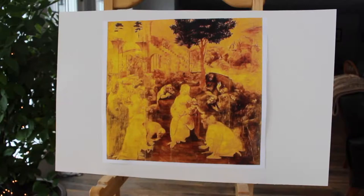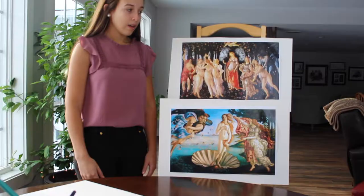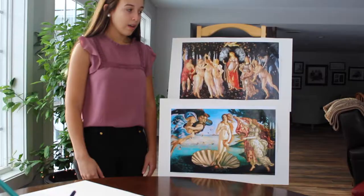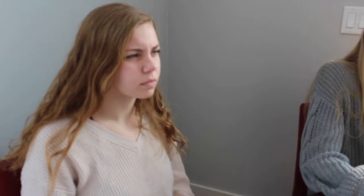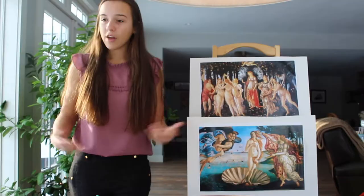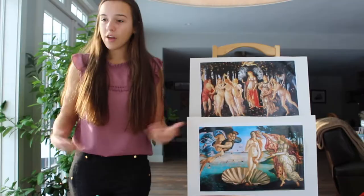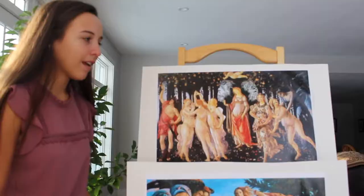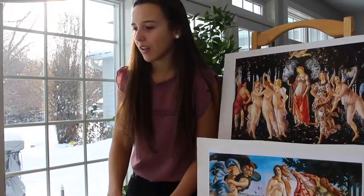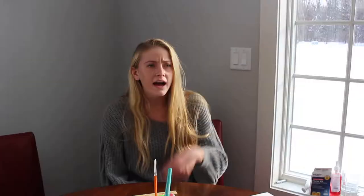Sfumato seems really interesting and popular. Da Vinci used it in two of his famous paintings, Adoration of the Magi and the Mona Lisa. The next paintings we have are La Primavera and Birth of Venus by Botticelli. I've heard of these two paintings before. Isn't the Birth of Venus a continuation of La Primavera? Very good, Katie! These two paintings both have Greek mythology figures in them. Botticelli's La Primavera is an allegory, which just means that there are hidden messages throughout the painting.